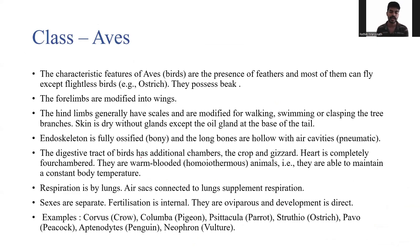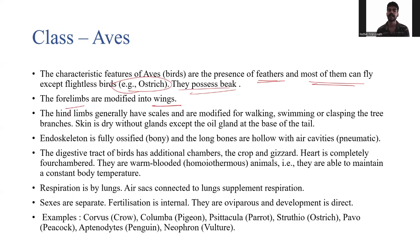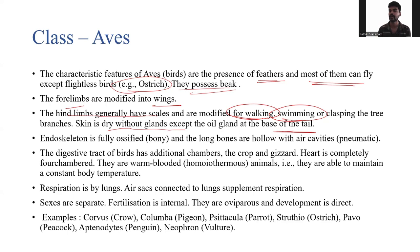The next class is Aves. Class Aves includes all birds. Characteristic features: presence of feathers, and most can fly except the ostrich. All birds possess a beak. Forelimbs are modified into wings. Hind limbs generally have scales and are modified for walking, swimming, or clasping. The skin is very dry without any gland, except the oil gland at the base of the tail.